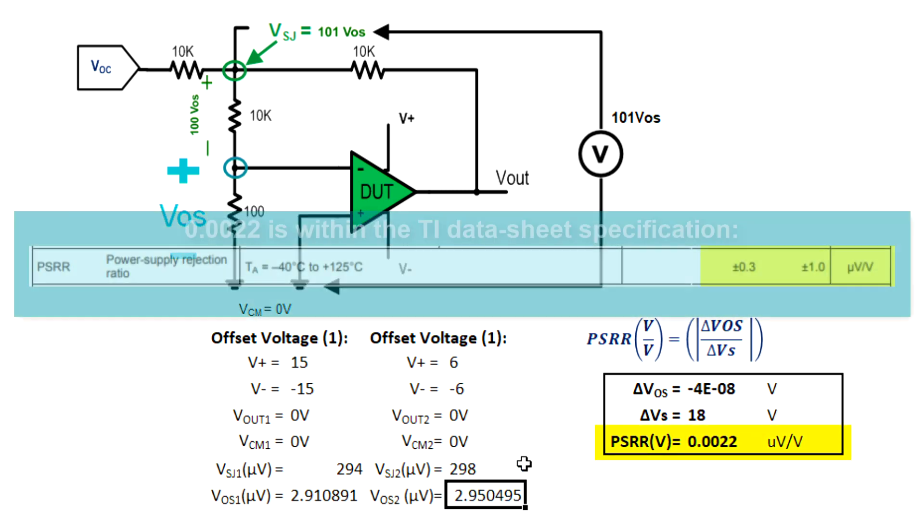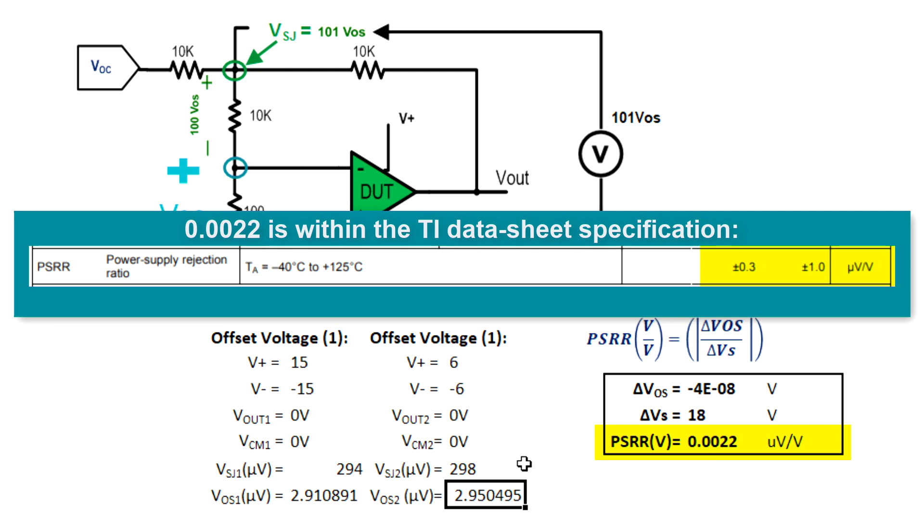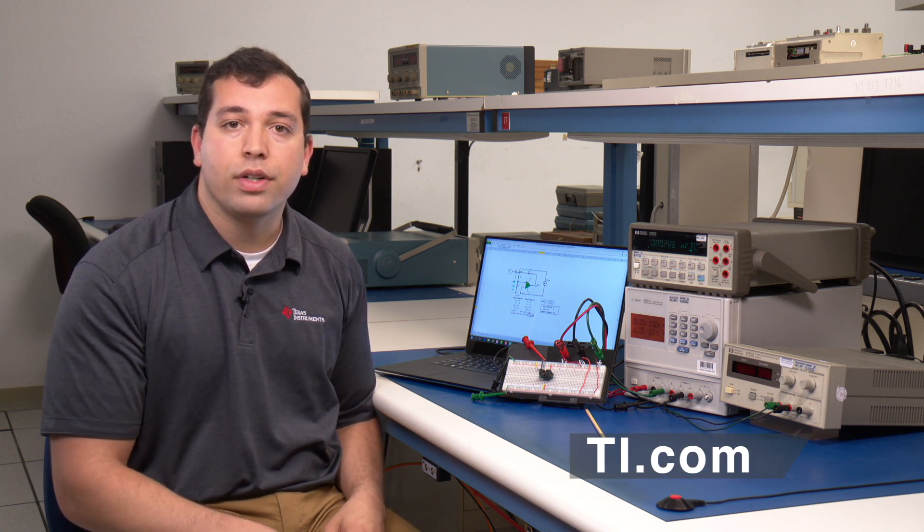In this example, we see the PSRR of this device is approximately 0.002 microvolts per volt. I've shown you how to measure PSRR of a linear amplifier. It's important to remember that all information necessary to test datasheet parameters can be found in the product datasheet. For datasheet information, please refer to TI.com. Thank you for watching this troubleshooting video on how to measure PSRR of a linear amplifier.